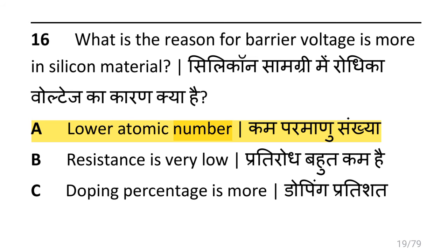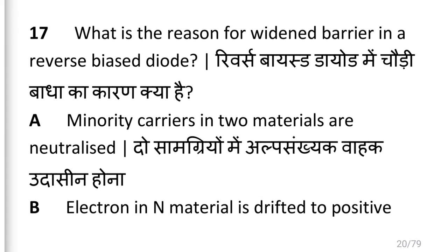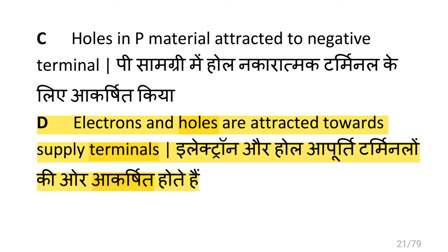What is the reason barrier voltage is more in silicon material? i.e. lower atomic number. What is the reason for widening of the barrier in a reverse-biased diode? i.e. electrons and holes are attracted towards the supply terminal.